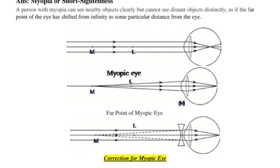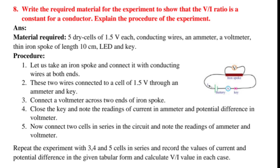Question 8. Write the required material for the experiment to show that the V-I ratio is a constant for a conductor. Explain the procedure of the experiment. Answer: Material required: 5 dry cells of 1.5 volts each, conducting wires, an ammeter, a voltmeter, thin iron spoke of length 10 centimeters, LED and key.